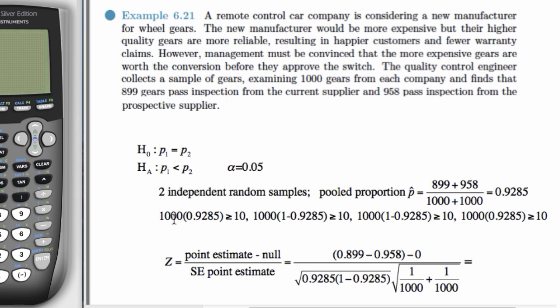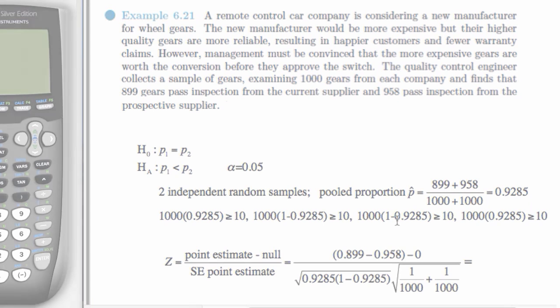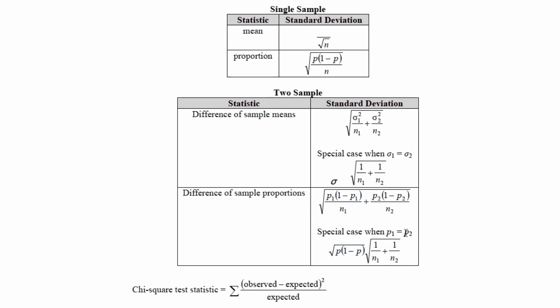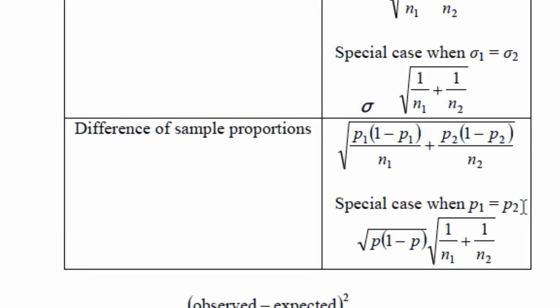So, here we have our n1 p-hat, n1 1-p-hat, n2 p-hat, and n2 1-p-hat are all greater than or equal to 10. And now, when we calculate our SE, we have to go to the formula sheet, and we're looking at the difference of sample proportions, and we have the special case where p1 equals p2. This is our null hypothesis.